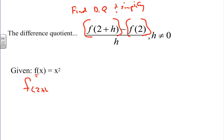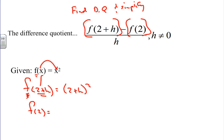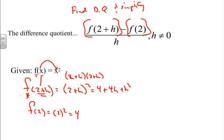f of 2 plus h means that 2 plus h is my input. I'm plugging into function f — they gave me the equation — plugging it into the placeholder. So it should be (2 plus h) squared. Then we have f of 2: I plug 2 into the placeholder, so it's 2 squared, which simplifies to 4. We foil (2 plus h) squared: that's 4 plus 4h plus h squared.